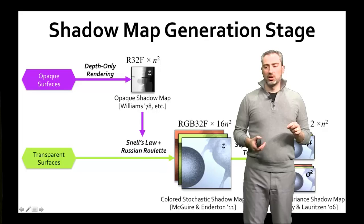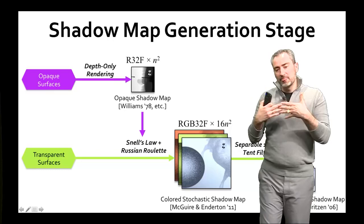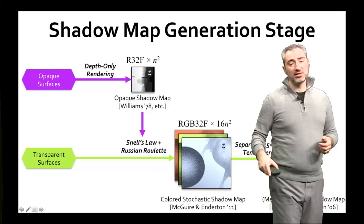Within that method, in order to create caustics, we apply Snell's law and the BSDF and Fresnel terms to compute that surfaces at normal incidence will allow light to mostly pass through, and light will get focused there because it's moving away from surfaces seen at glancing angles. This produces a very high-resolution colored stochastic shadow map.